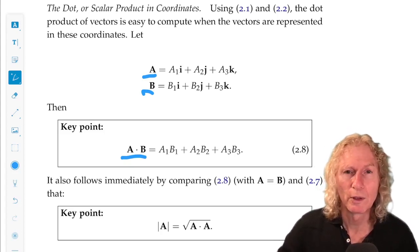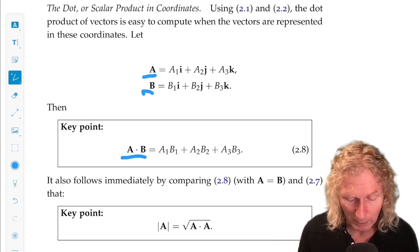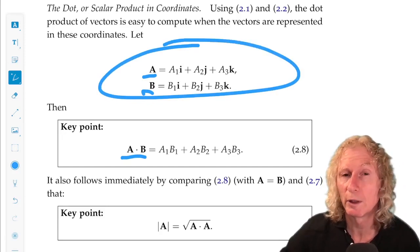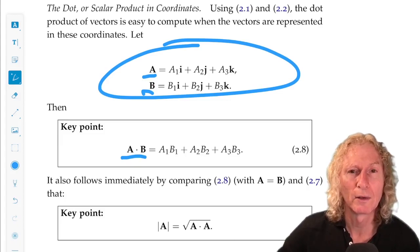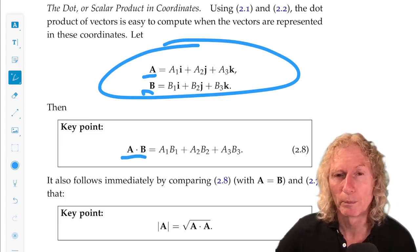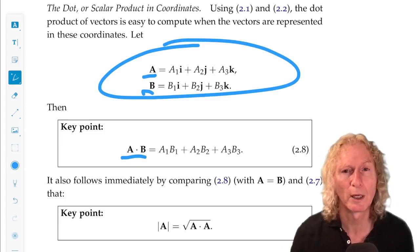Well, you just take the dot product of A and B as defined here and use the distributive property of the dot product that I discussed in the exercises at the end of the previous chapter.